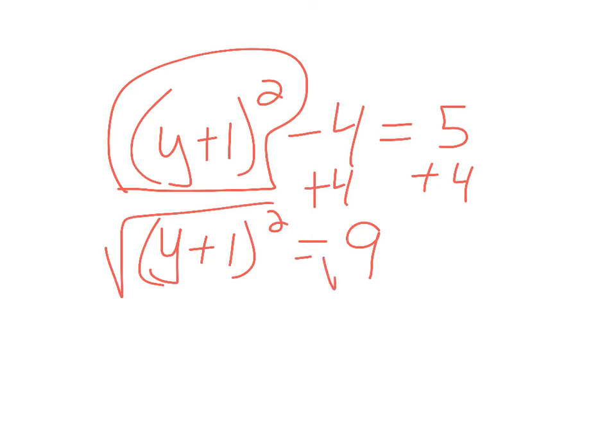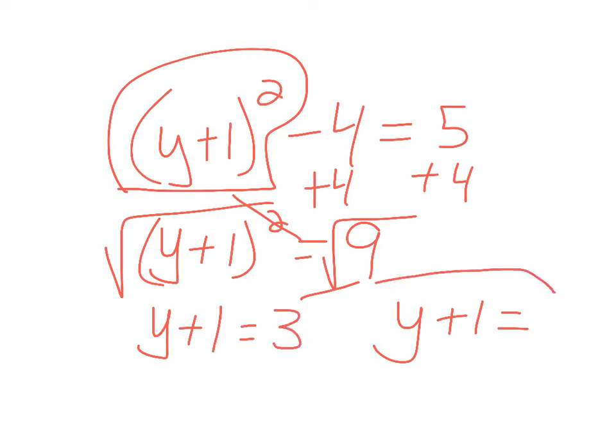Now I can square root, and this is going to give me two different answers. So the square root and a square are inverses, so I'm left with y plus 1. And here I get two answers. I get 3, and I get negative 3.